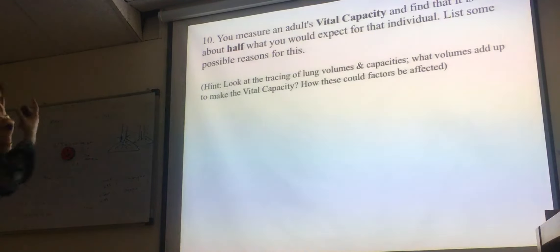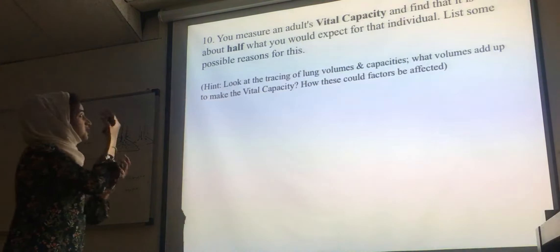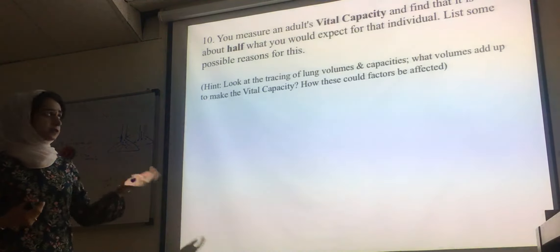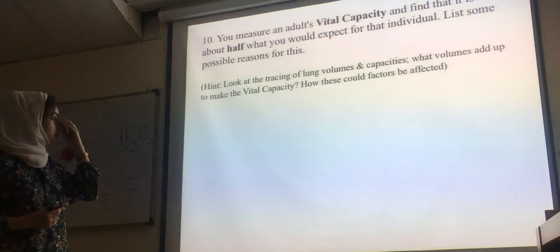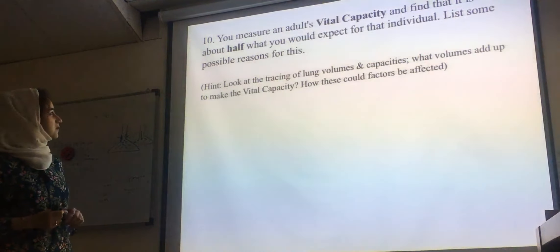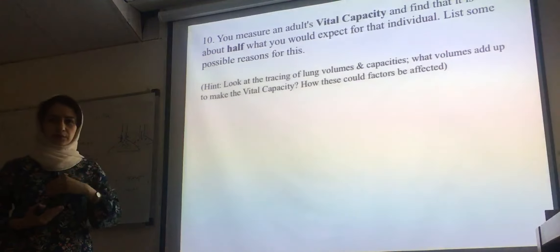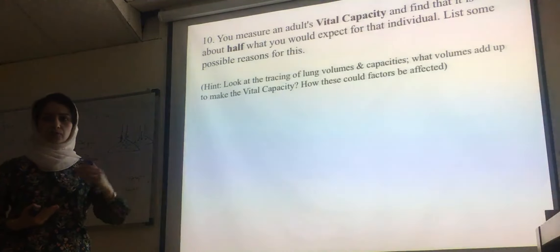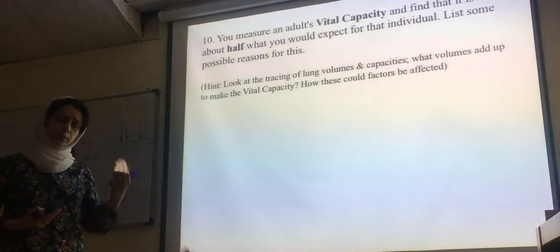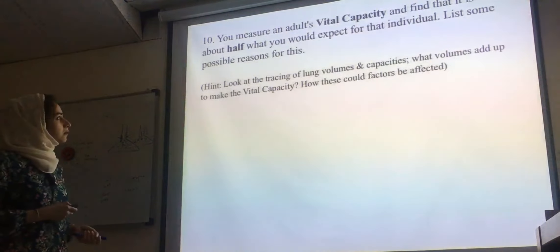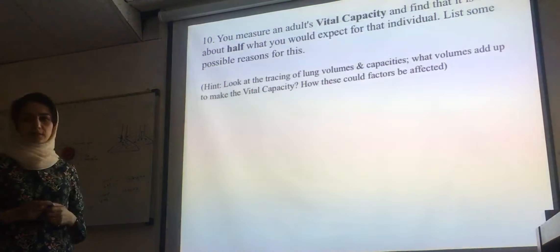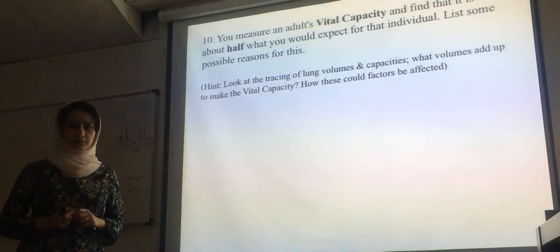Question 10. You measure an adult's vital capacity and found that it's only half of normal. Vital capacity decreased to about half of normal. What are the possible reasons behind that?